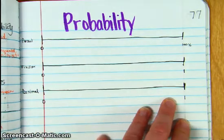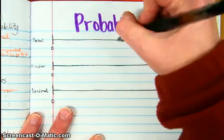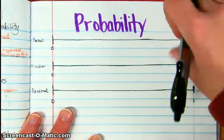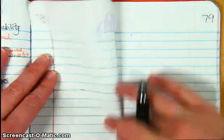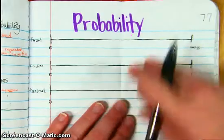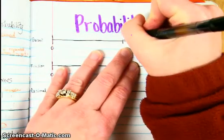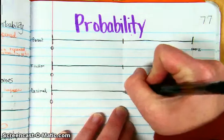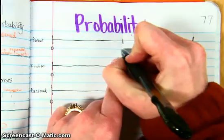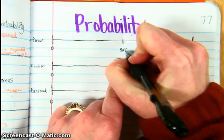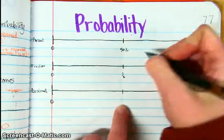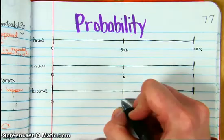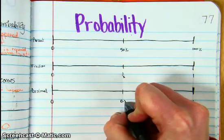If I were to divide each of these lines in half, for percent that would be 50 percent, for a fraction that would be one half, for a decimal that would be 0.5.